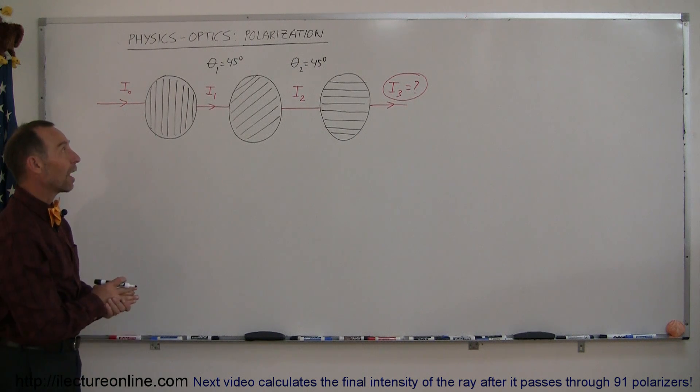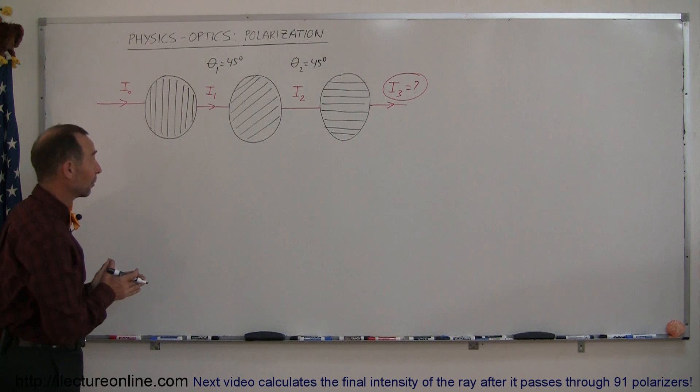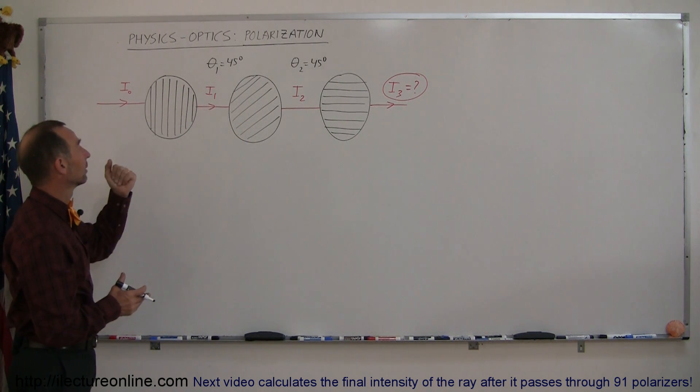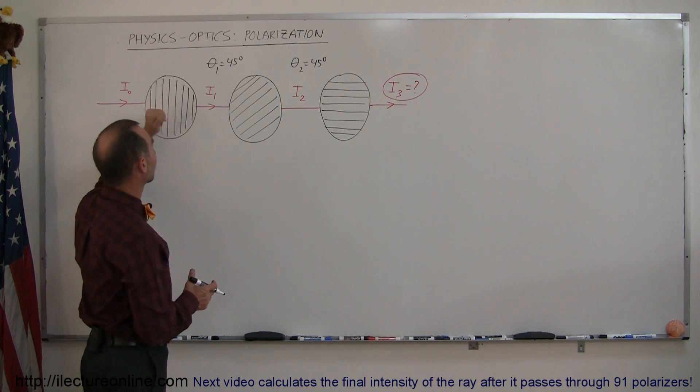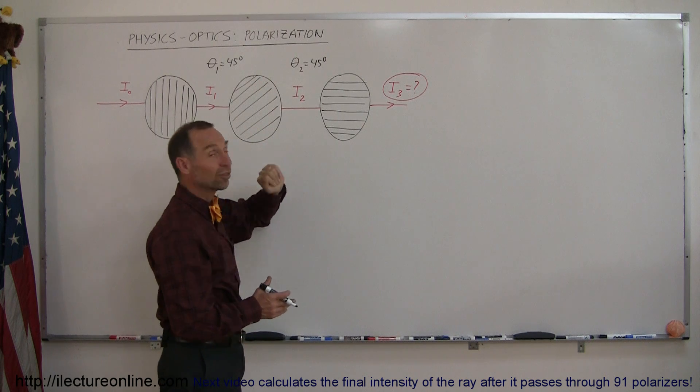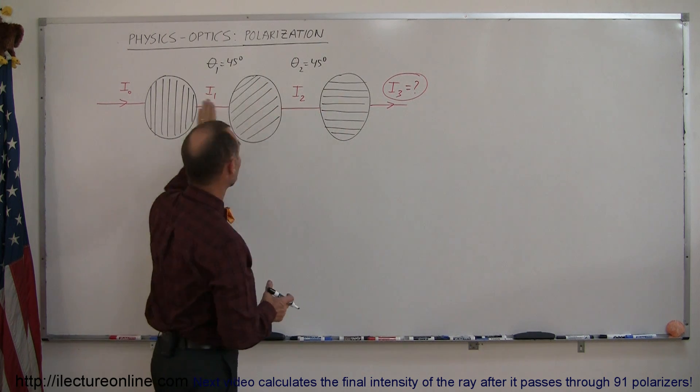Here's another example of how we work with polarizers. We now have three polarizers. Notice that the first one is perpendicular, the second one is at a 45-degree angle relative to the first one, and the third one is at a 45-degree angle relative to the second one, which means the third one is perpendicular to the first one.